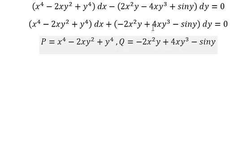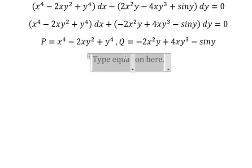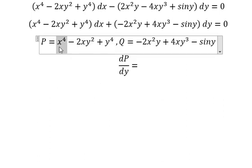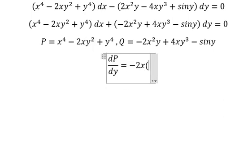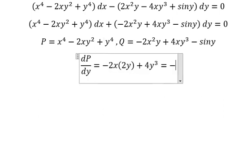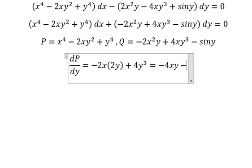We have dP/dy. That means we need to do the derivative of P with respect to y. This one doesn't have y, so we get zero. This one has 2y. This one has 4y³, so we have -4xy and +4y³.